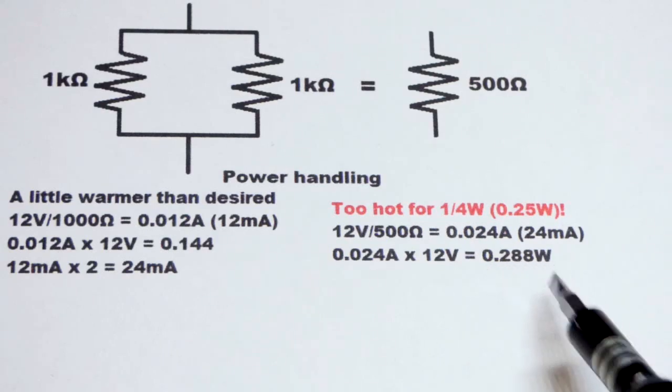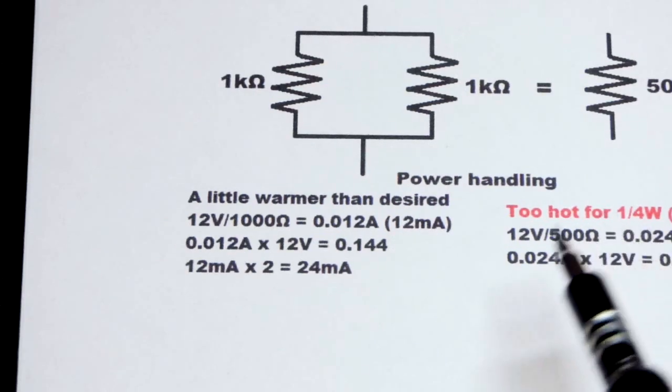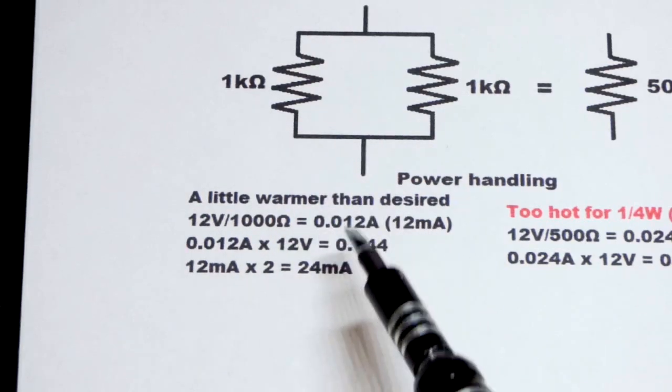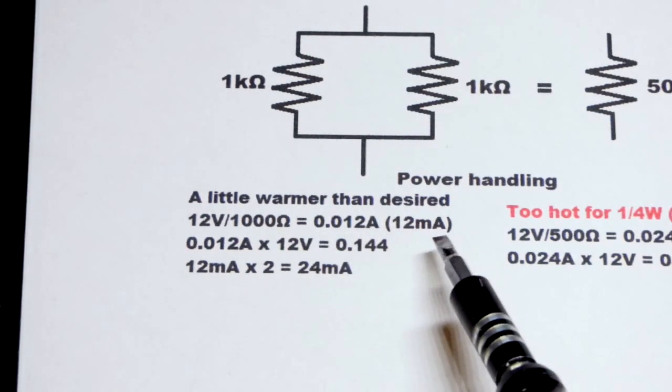With the voltage across it, a quarter watt resistor will be well above a quarter watt. So if we take that same voltage and put it across 1000 ohms of resistance, we'll get 12 milliamps of current.